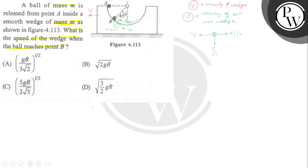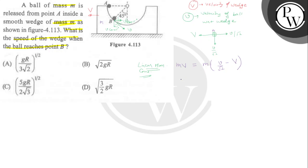Now we apply linear momentum conservation in the x-direction. Initially, momentum is zero. The ball has mass m and the wedge has mass m. Applying conservation: m·(v/√2 − V) = m·V. This gives us small v = 2√2·capital V.